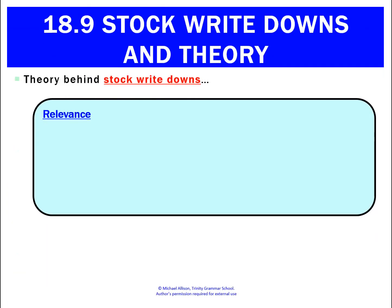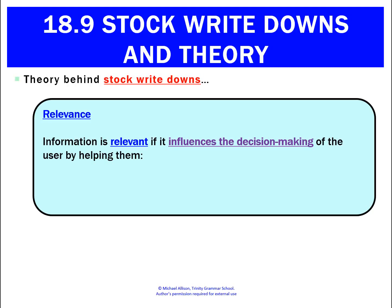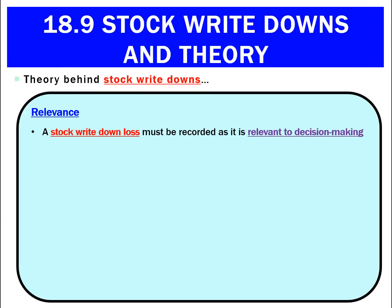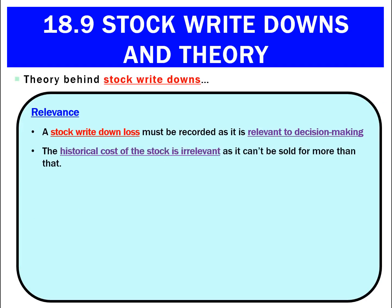What else might tell us to do a stock write-down? Conservatism was a principle of accounting — what about a qualitative characteristic? We could use relevance. Information is relevant if it influences our decision-making, so it should be included. That's all about whether we can evaluate future or past decisions, or confirm or correct them. If we've got a stock write-down, it must be recorded because it is going to affect our decision-making. What we paid for stock in the past is relevant if I have to sell it for less than that.